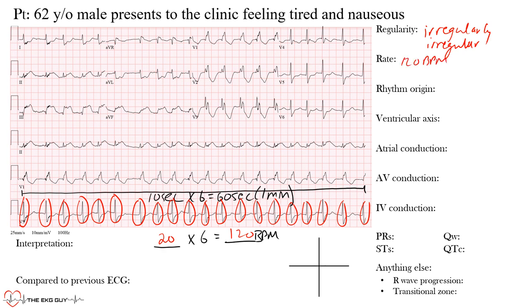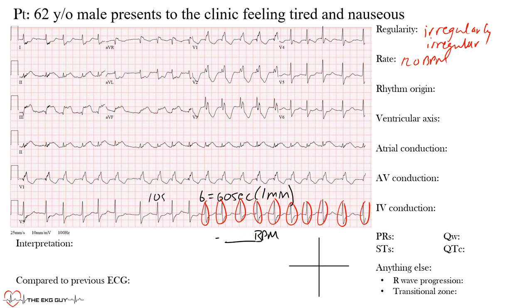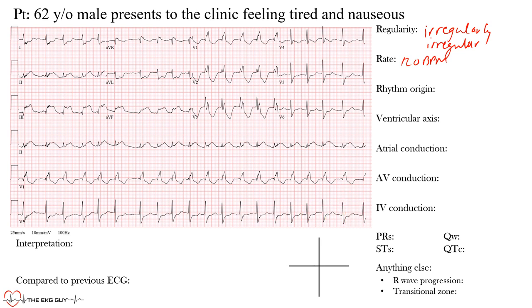That's the ventricular rate we found. If you wanted to find the atrial rate, you'd have to find P waves and count those out. You can also use T waves to find the ventricular rate. We found a ventricular rate of 120; the machine actually gives us 116 beats per minute, so we're pretty close.